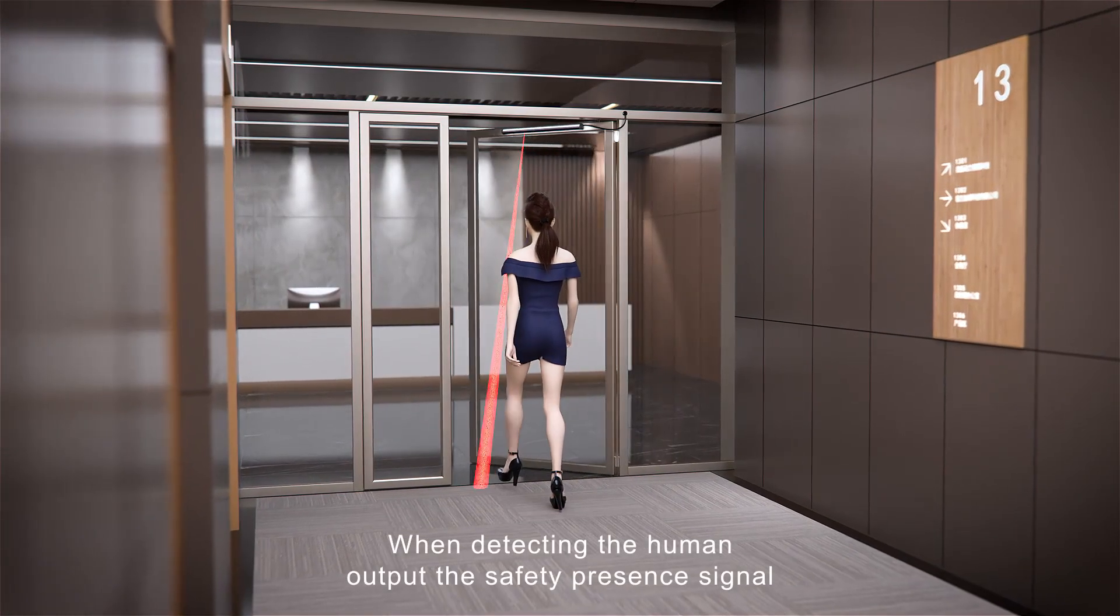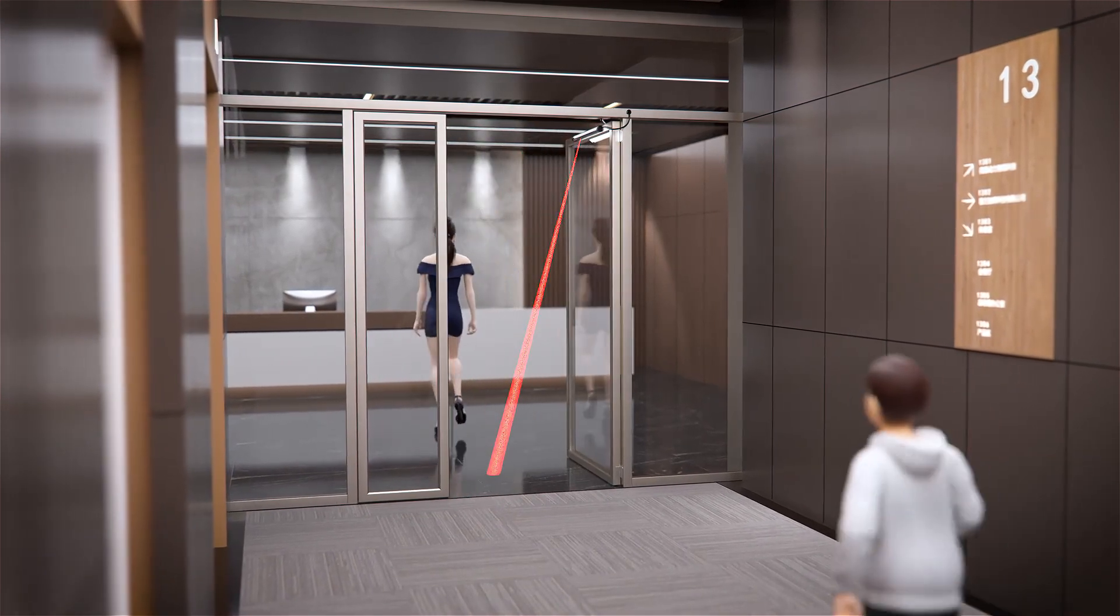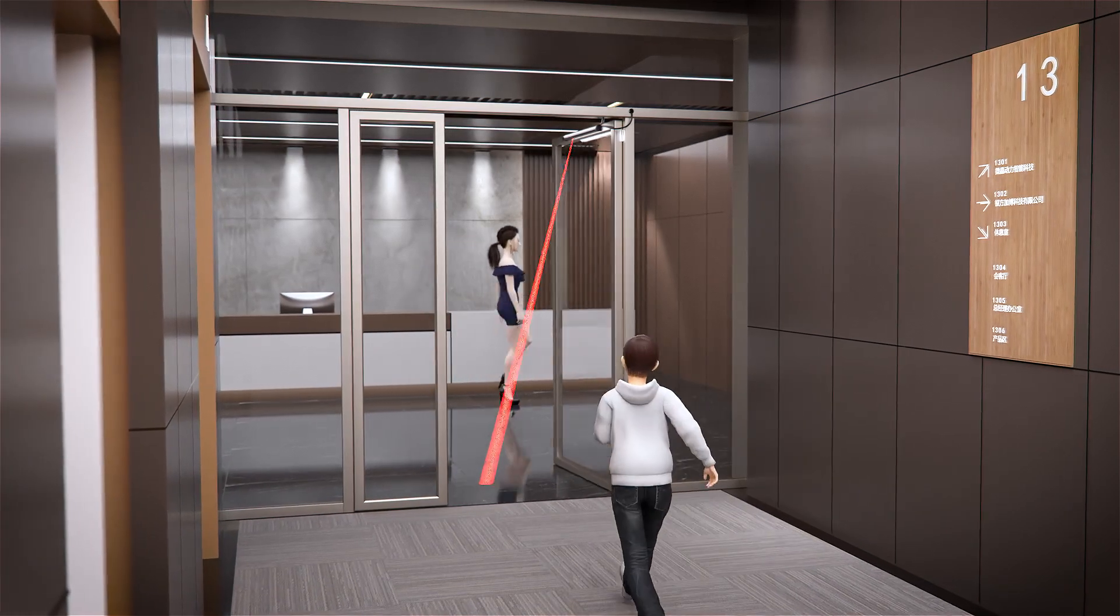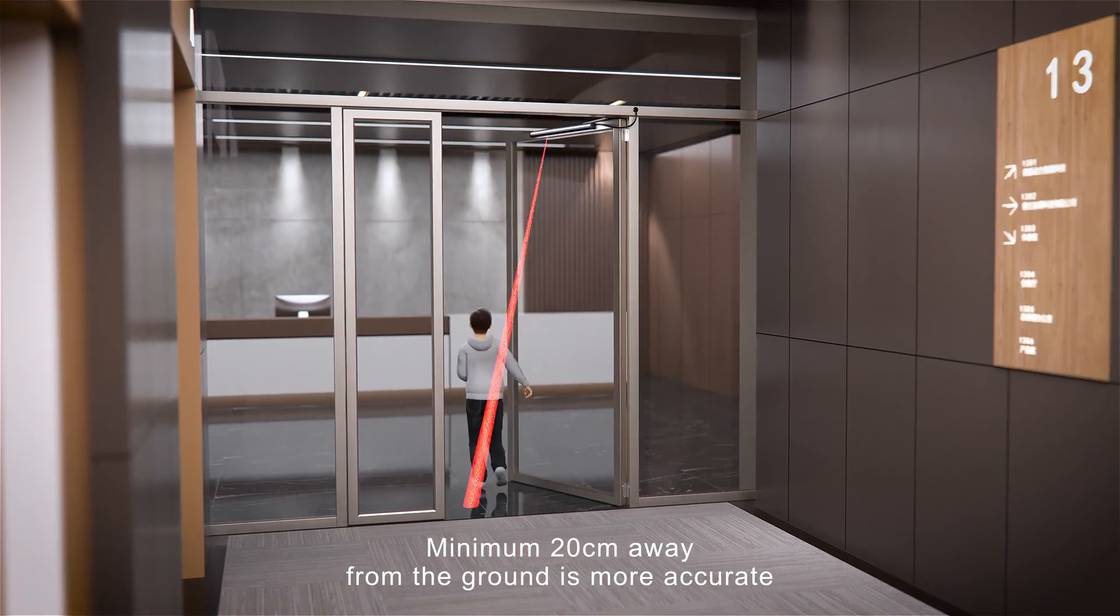When detecting the human, output the safety presence signal. Minimum 20 cm away from the ground is more accurate.